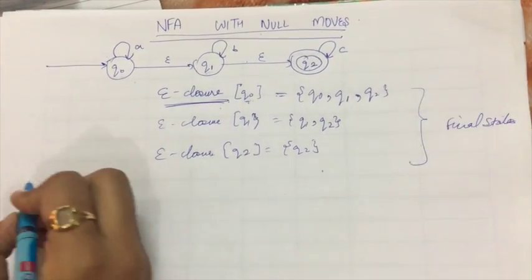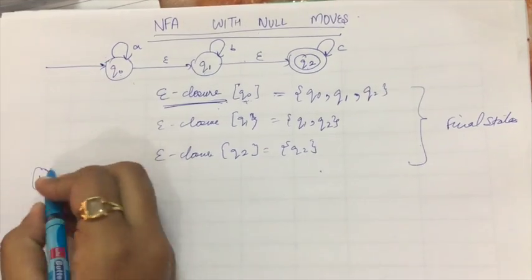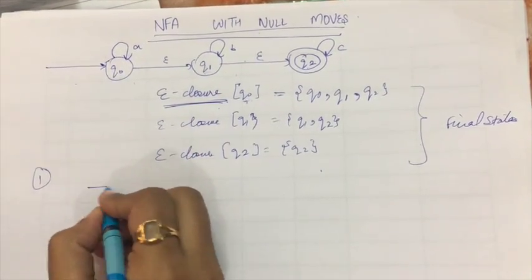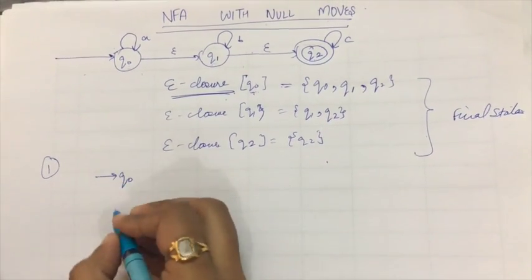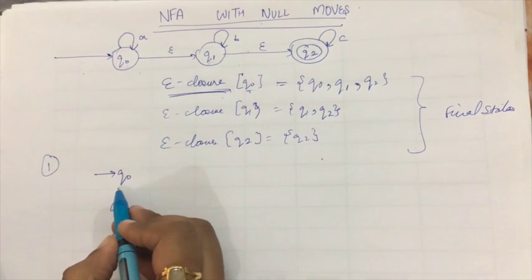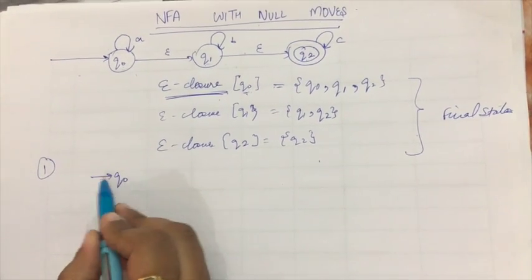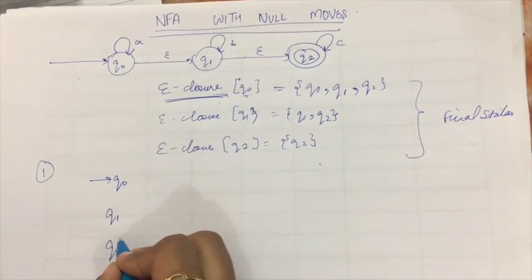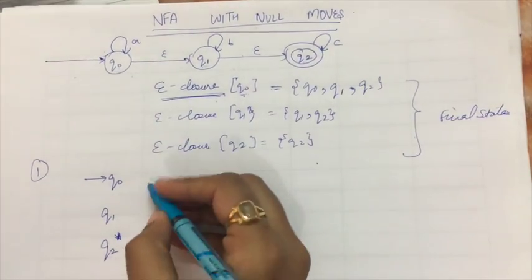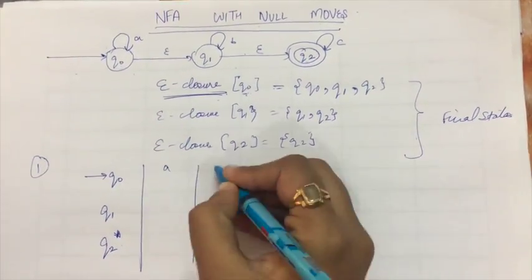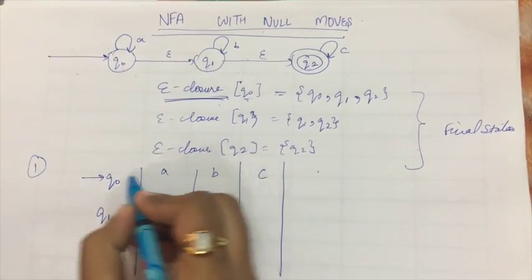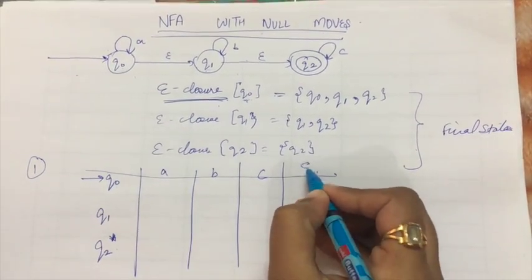The first thing we are going to do is make a transition diagram for the given NFA. This is the starting state — we always mark the starting state with an arrow and the final state with a double circle using a star. The input symbols are A, B, C, and there is an extra input symbol, the null.